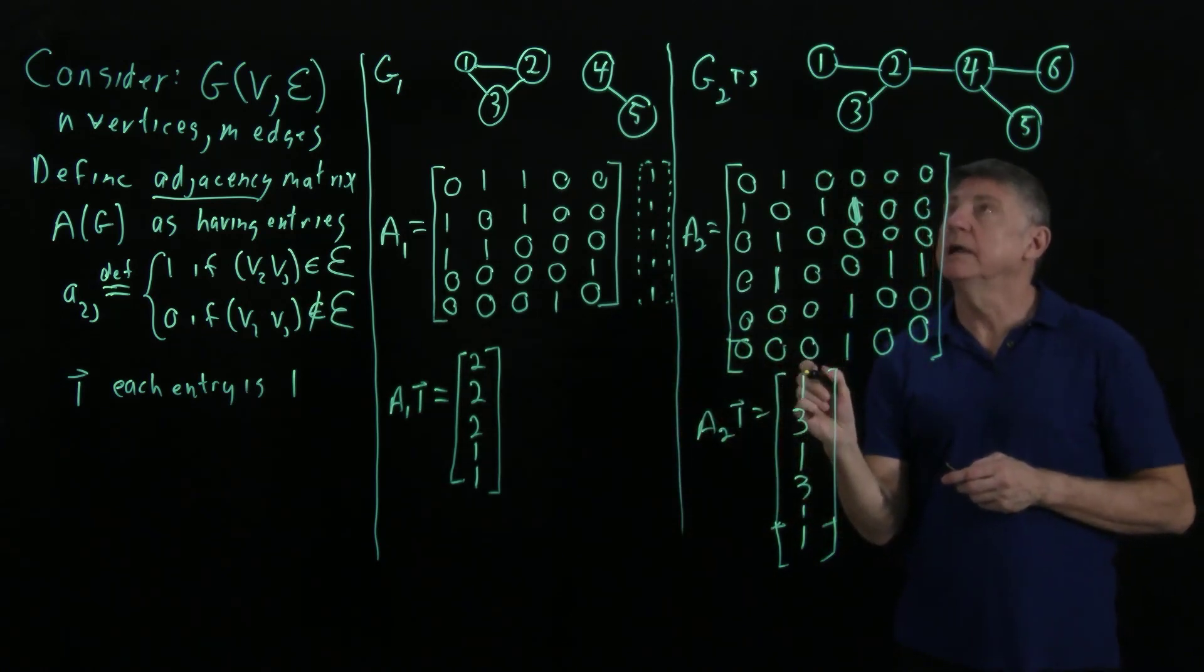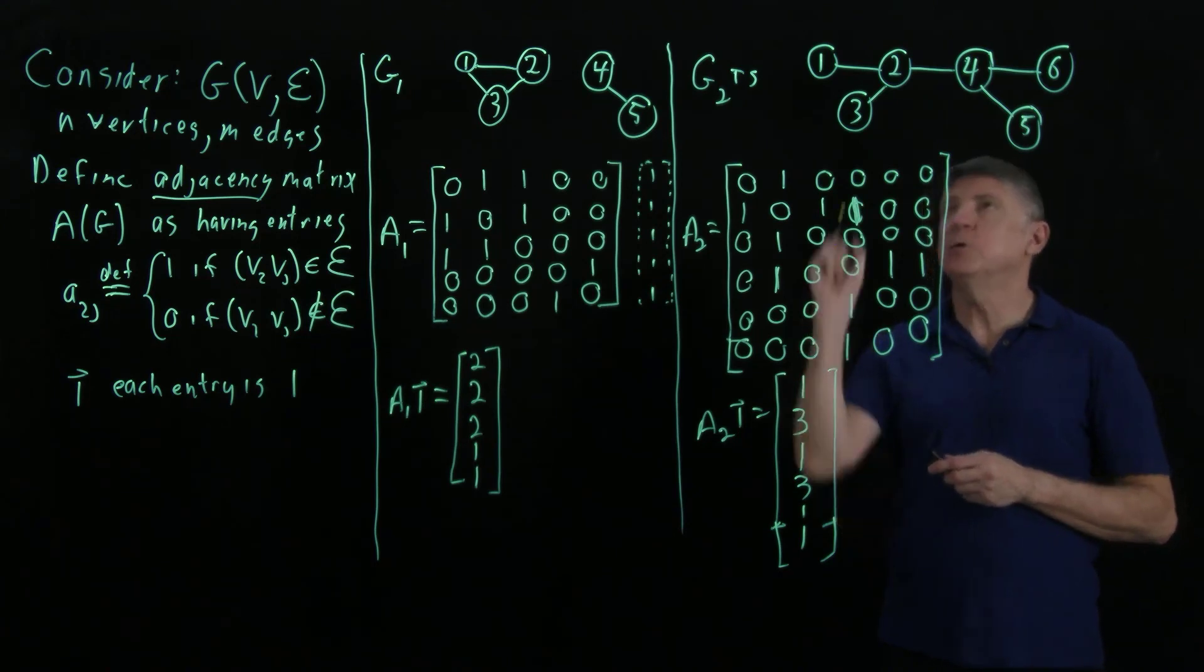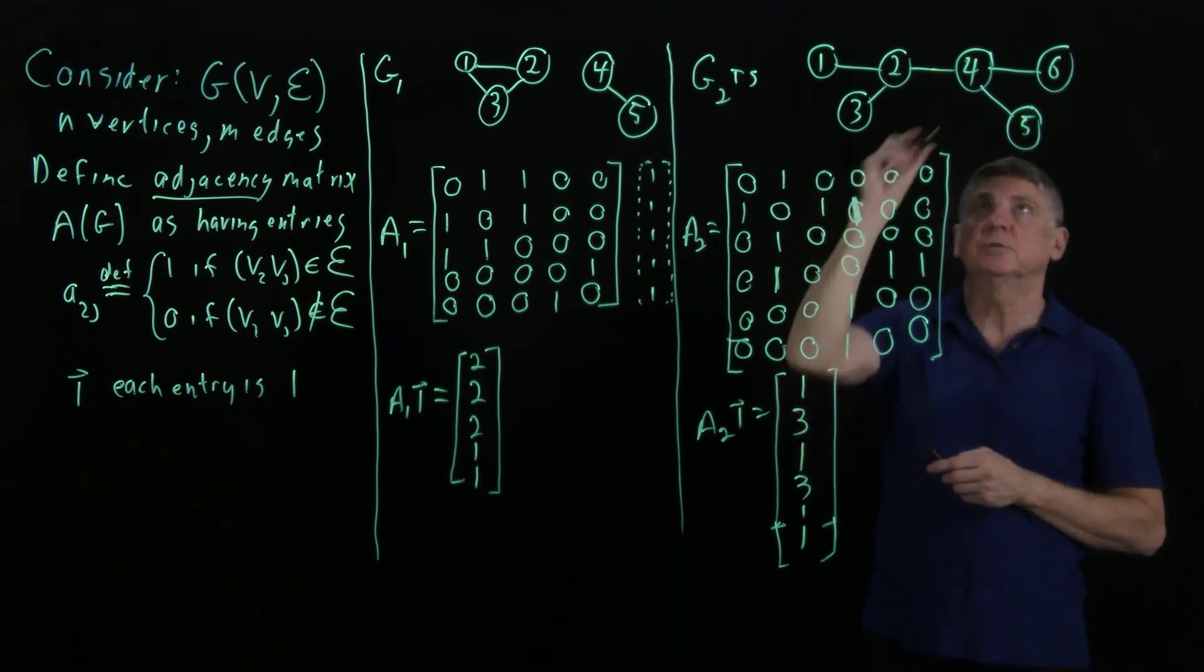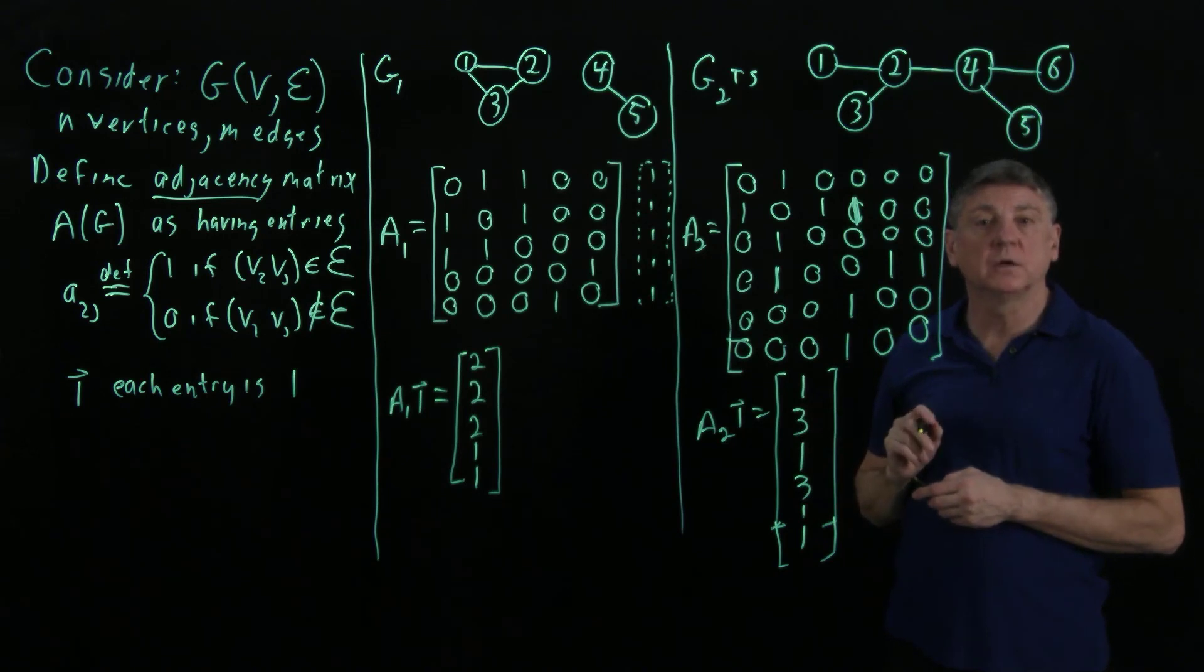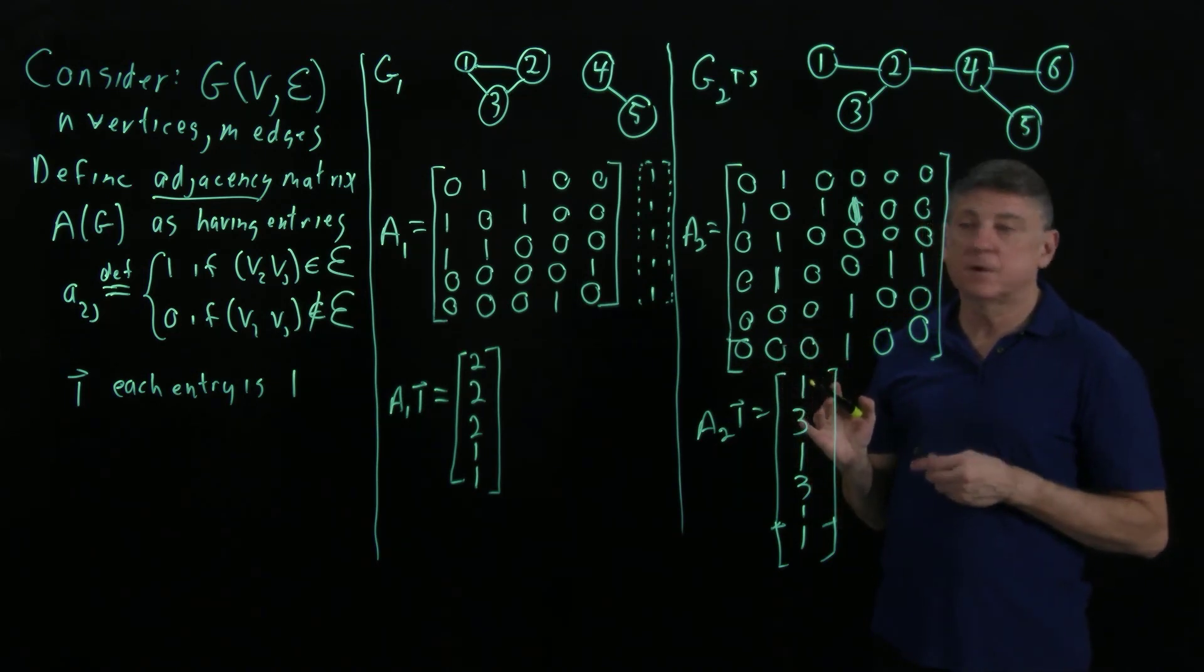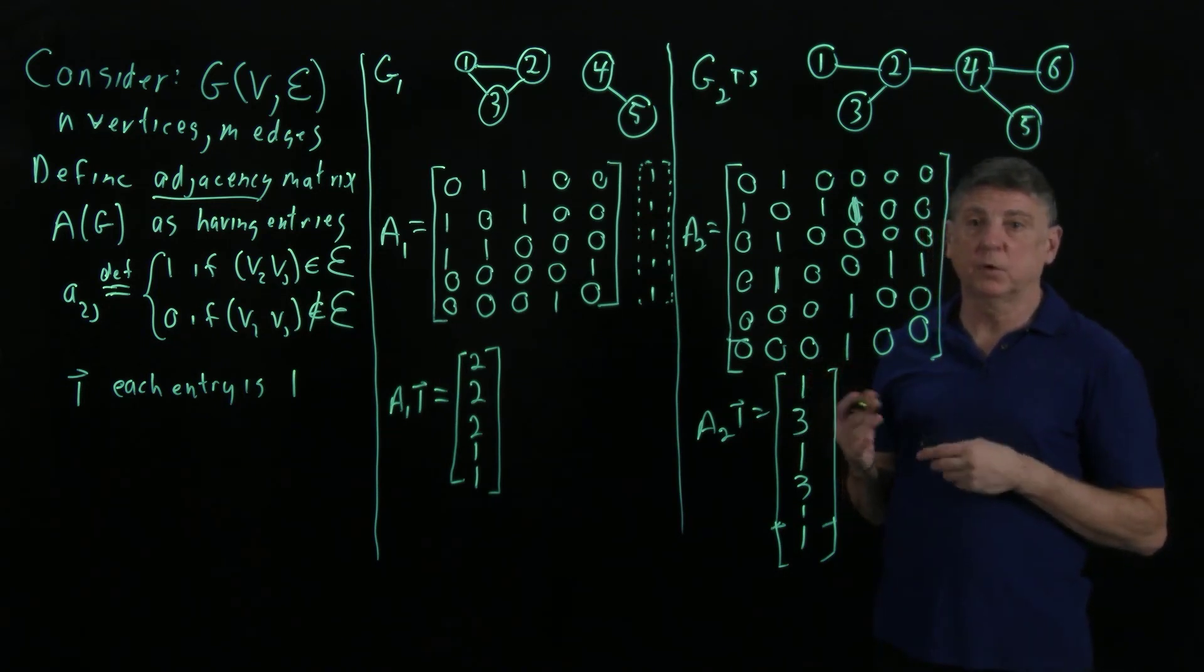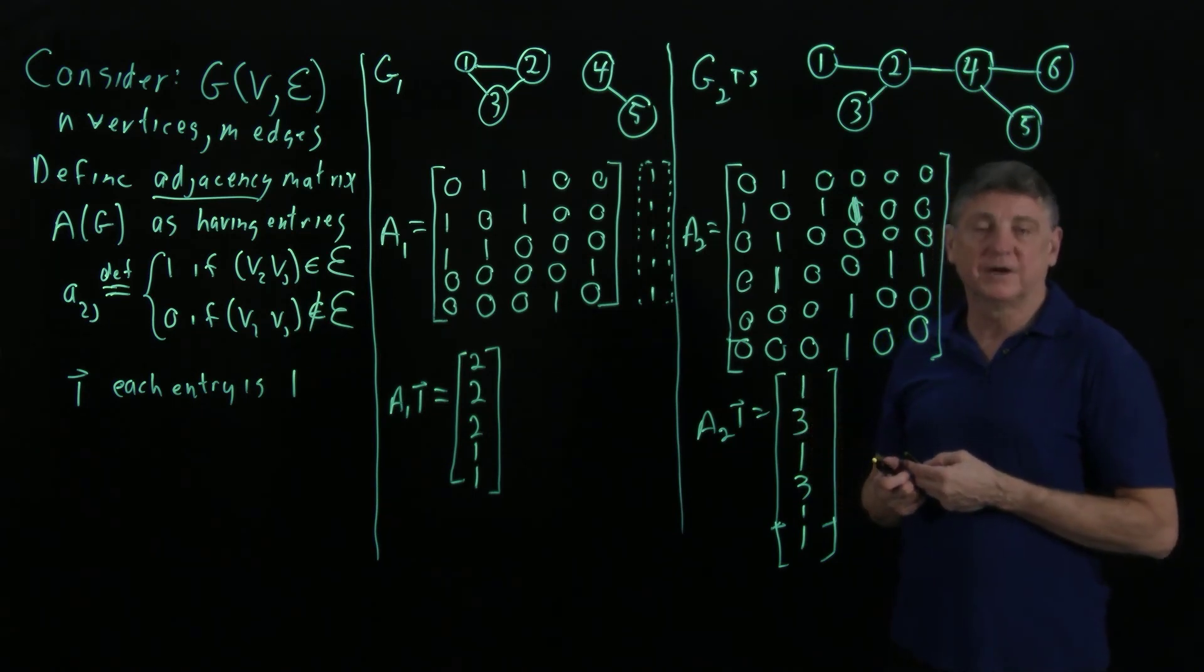Similarly, over here, it's saying that vertex one has degree one, vertex two has degree three. Well, there are 1, 2, 3 edges that contain vertex two, 1, 2, 3 edges that contain vertex four, and so on. So, by doing a matrix vector calculation from the adjacency matrix of a graph, we can deduce a property that we don't need to traverse a graph for. Once we have its adjacency matrix, we can start to extract some useful properties by using simple linear algebra.